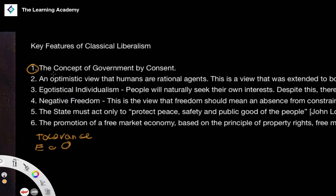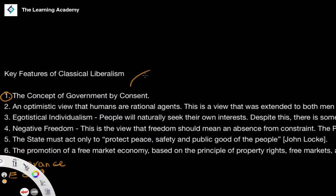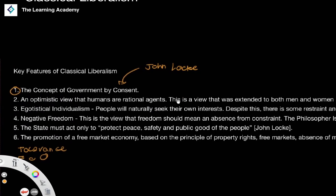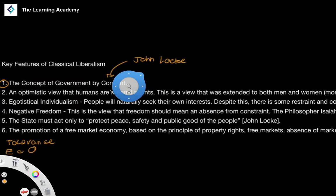The first feature is government by consent. This is a Lockean idea — something that John Locke developed. The idea is that if a state is going to govern a people, it has to do so through the consent of the people. If it doesn't have that consent, it's not a liberal state and would be seen as unjust according to liberal philosophers.